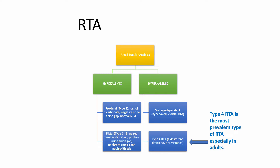We have two types of renal tubular acidosis that cause hypokalemia: proximal or type 2 RTA, and distal or type 1 RTA. Today we talk about hyperkalemic RTA, which includes voltage-dependent RTA and type 4 RTA — aldosterone resistance or deficiency. Type 4 RTA is the most prevalent type of RTA, especially in adults.